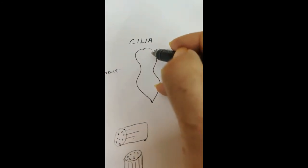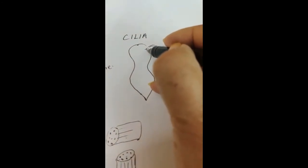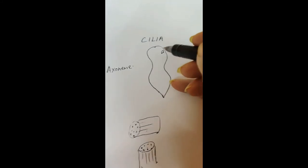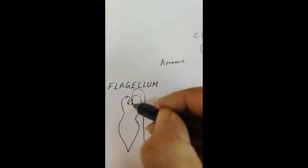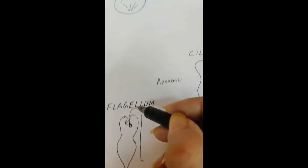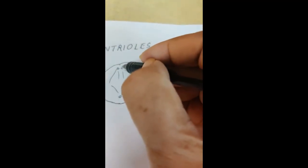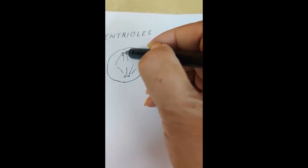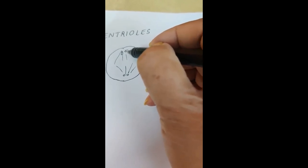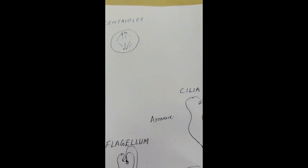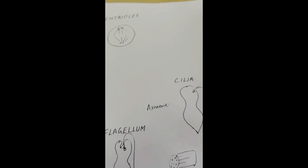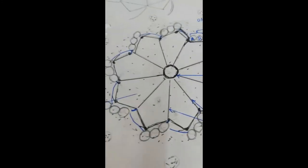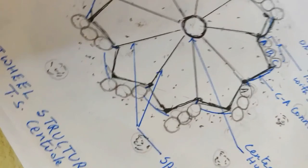So here is lying one of them. Okay, one of them is lying here. While here they would be lying at right angle to each other. If one is like this, then other would be like this. So this is how you are going to draw the cartwheel-like structure of the centriole.